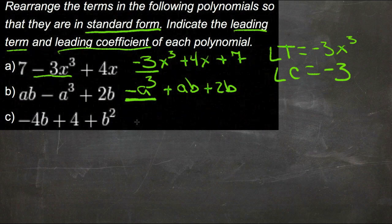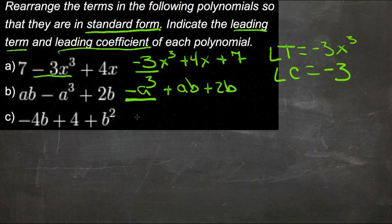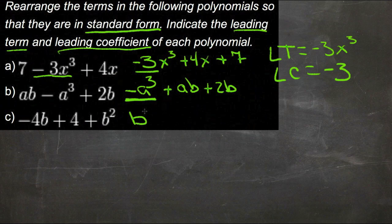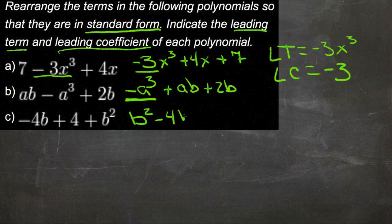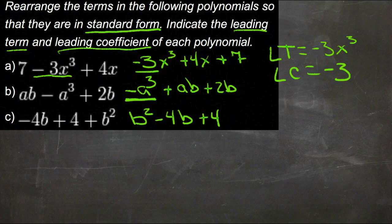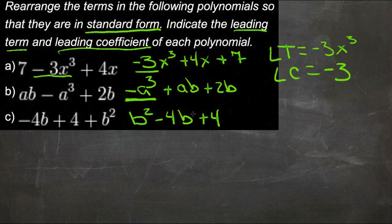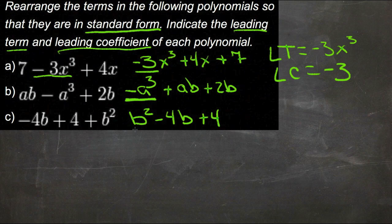And then for example c, we have b squared, then negative 4b, and positive 4. So we have a b squared term, a b to the first term, and a b to the zero term. Our leading term is b squared, and our leading coefficient would be that same hidden 1.